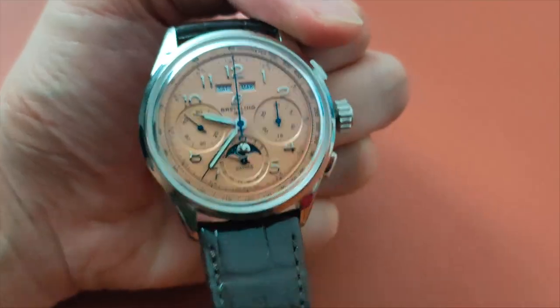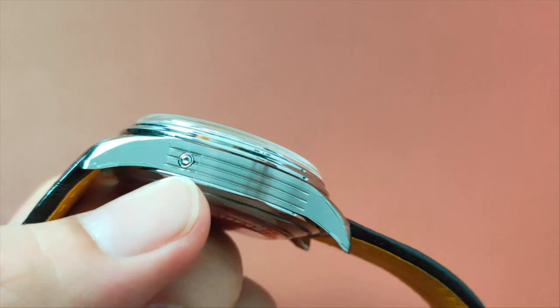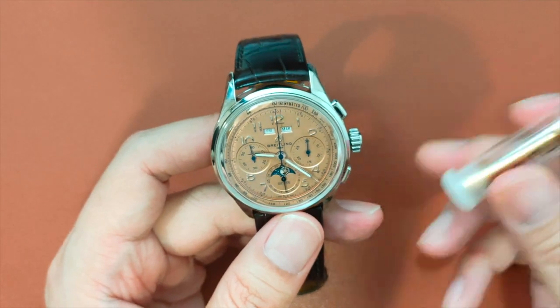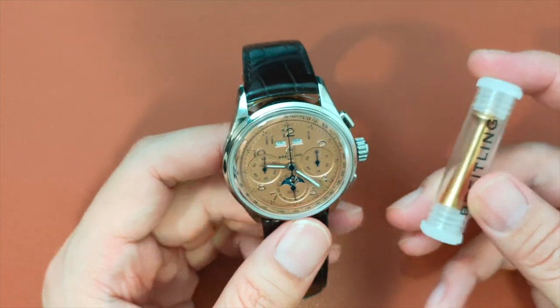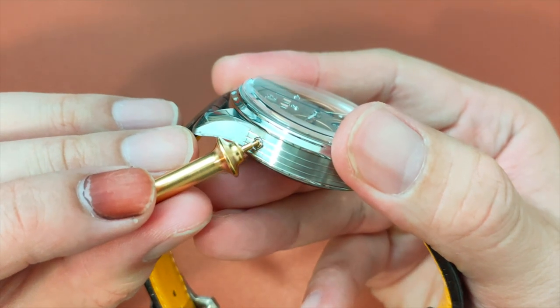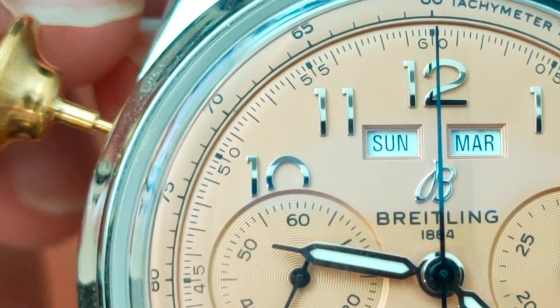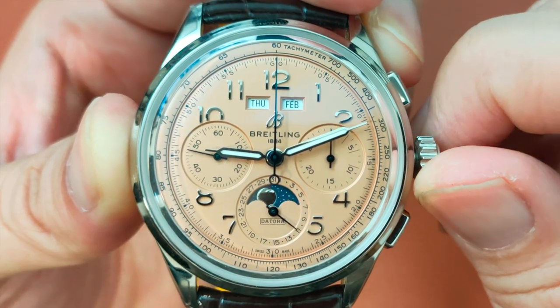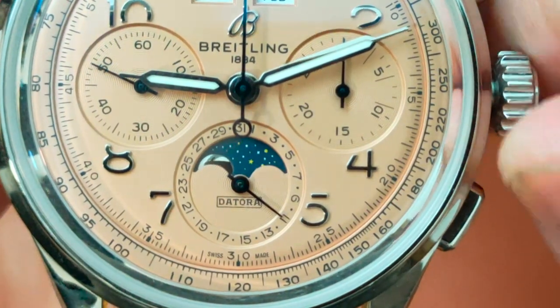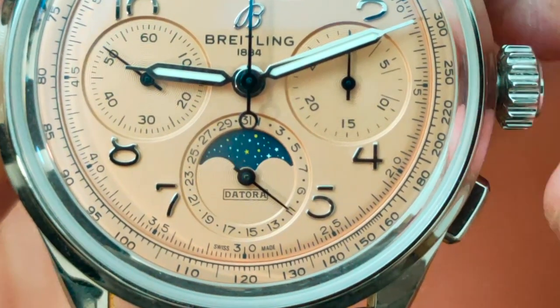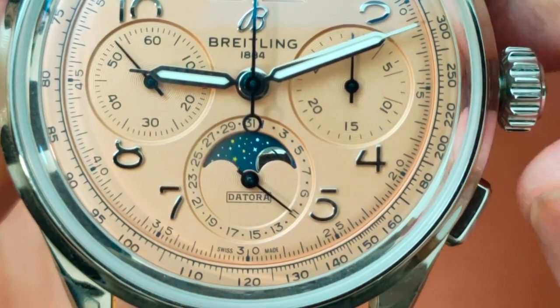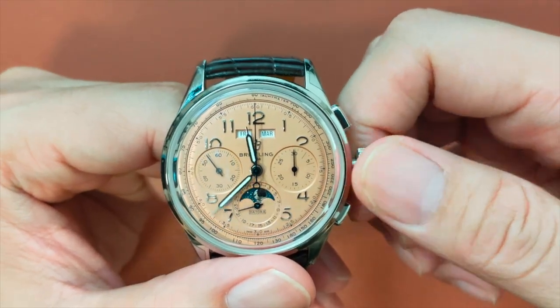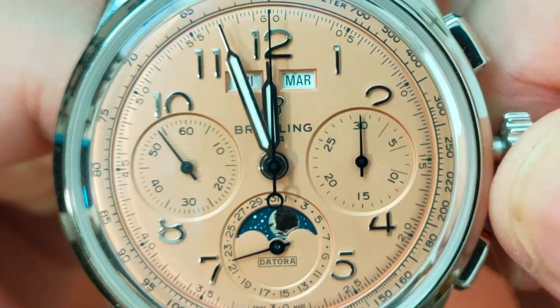To change the day, you will need to hit that pusher on the left. Thankfully, Breitling provides a golden pusher to help you with setting the day. Of course, you can use other stuff as long as you don't scratch that beautiful case. To adjust the moon phase, you rotate the crown clockwise. Sounds like a lot of work, doesn't it? Fear not! In position 2, when adjusting the time with the minute hand, the date, day, and moon phase changes with a snap at the stroke of midnight.